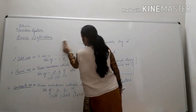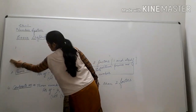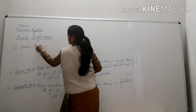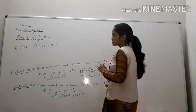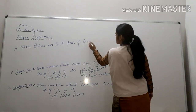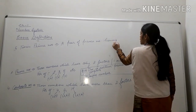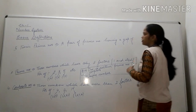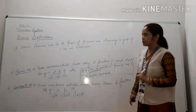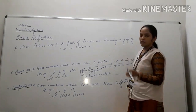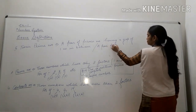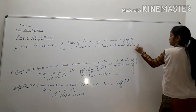Now, what can we say about twin prime numbers? Twin prime numbers are a pair of prime numbers having a gap of one number in between, or we can also say a pair of prime numbers having a difference of 2.